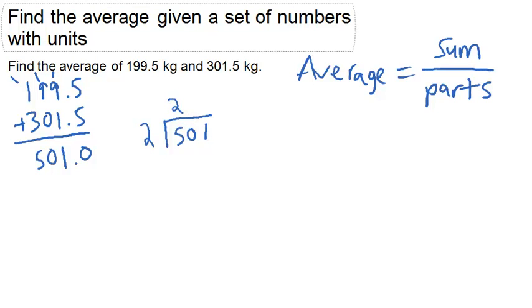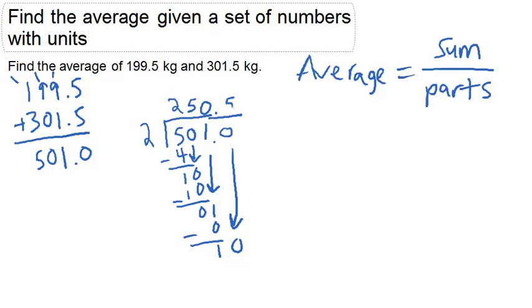2 goes into 5 two times, with a remainder of 1. 2 goes into 10 five times, with a remainder of 0. 2 goes into 1 zero times, we add a zero and a decimal, and 2 goes into 10 five times.